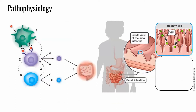When ingested gluten molecules first reach the small intestine, they are absorbed through the intestinal epithelium into the next layer called the lamina propria. Once there, some molecules are taken up by antigen-presenting cells, which are part of the nonspecific immune system, and they present the gluten molecules on their surface. In someone with celiac disease, specialized immune cells called T cells recognize these molecules as foreign antigens, and this triggers the release of cytokines, which are molecules that cause inflammation.